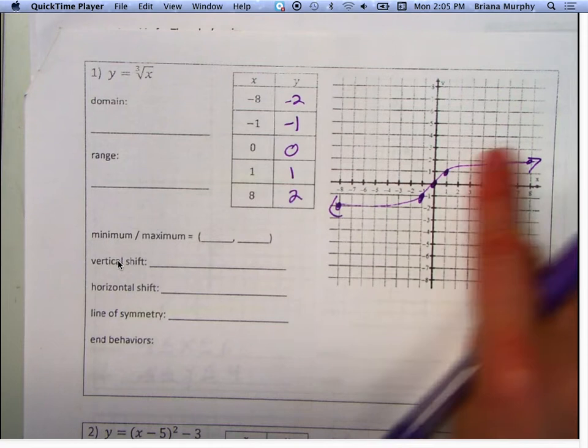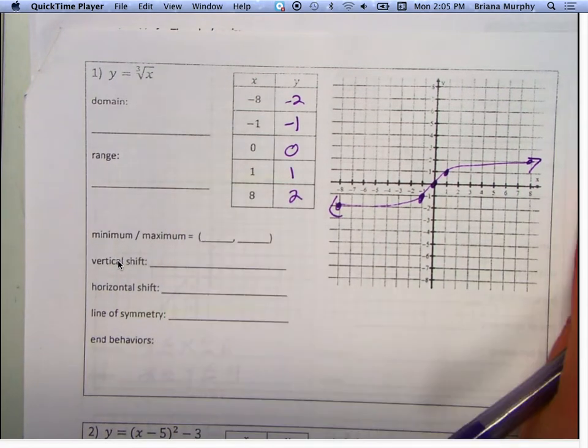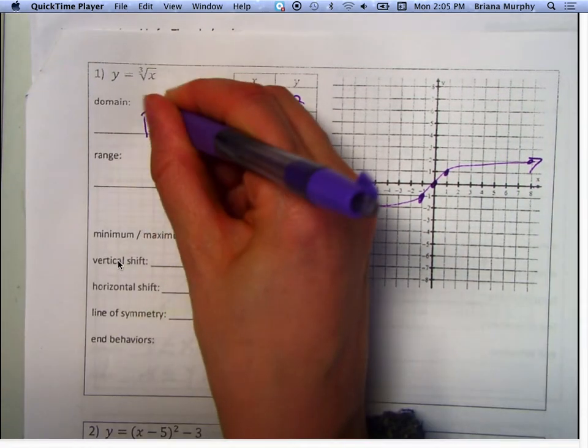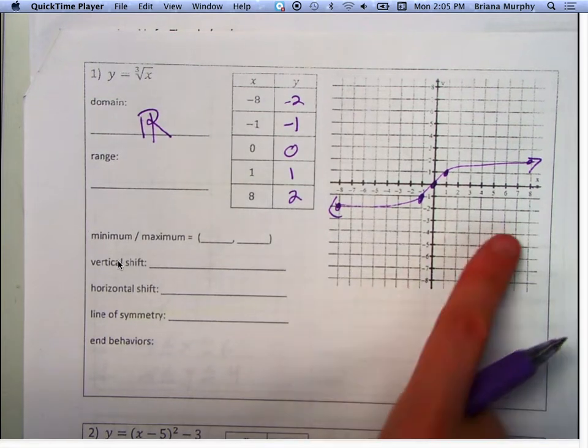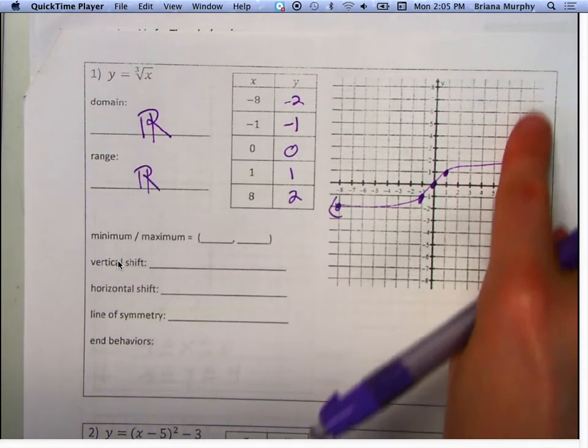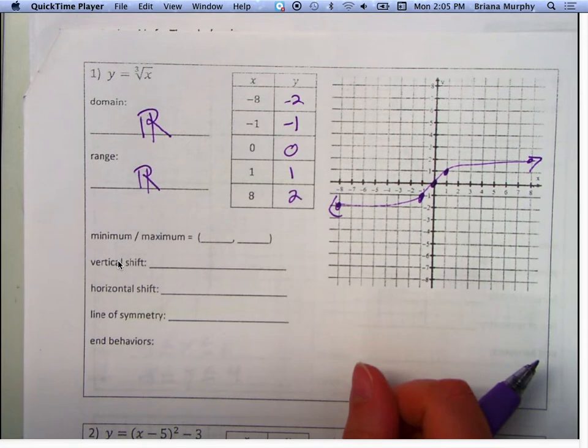Okay. What is the domain for this? What are the possible X's? All real numbers. Remember, I do that double R for all real numbers. What about the range? All real numbers. As infinity goes on, it gets closer and closer. It's just like an R.